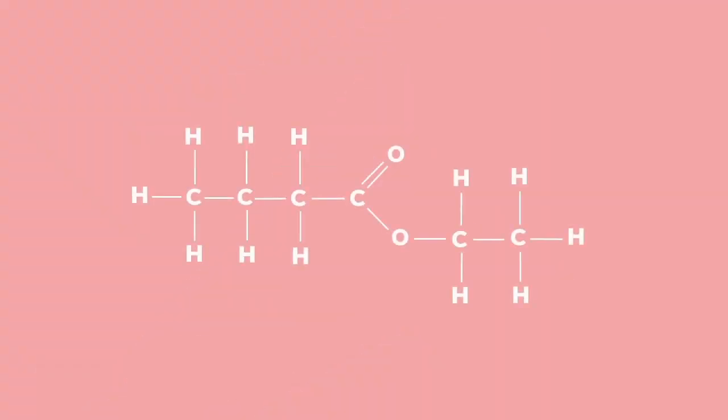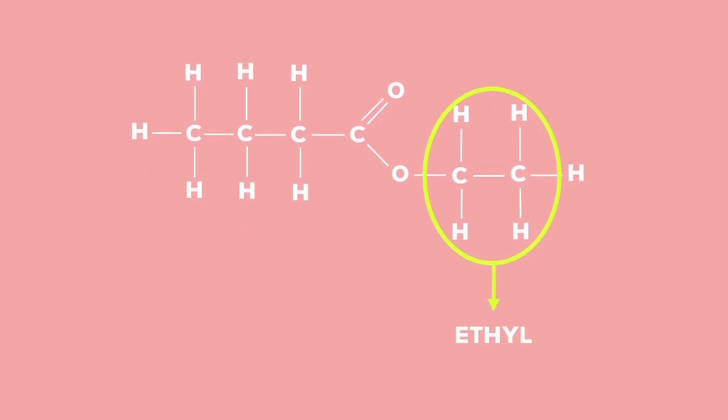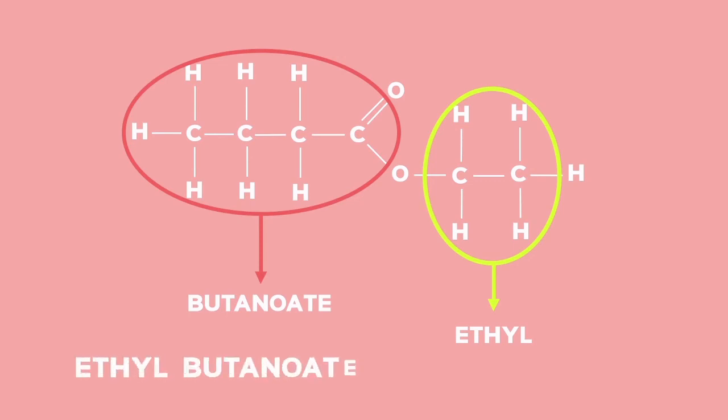So, in this example, we see that our alcohol side contains two carbons, and our carboxylic acid side contains four carbons. The name of this ester is ethyl butanoate.